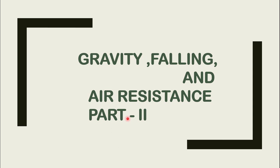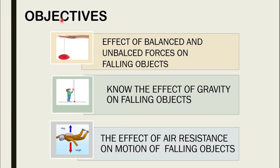Our today's topic is Gravity, Falling and Air Resistance Part 2. In our previous lecture, we discussed Gravity, Falling and Air Resistance Part 1. The objectives of today's lesson: you will be able to know the effect of balanced and unbalanced forces on falling objects, the effect of gravity on falling objects, and the effect of air resistance on the motion of falling objects.